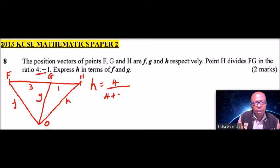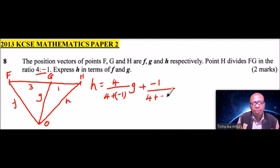So we say it is 4 plus minus 1. And this, we take the position vector G, because we are talking of this position vector, so that is the position vector G plus, the other one is minus 1, divide by, we add 4 plus minus 1, which is,